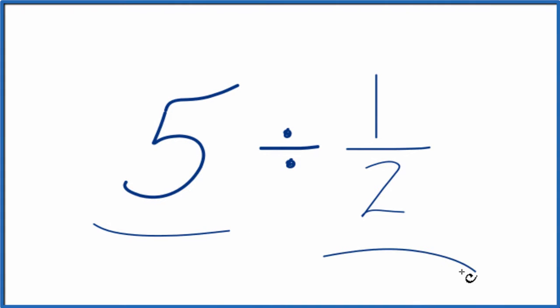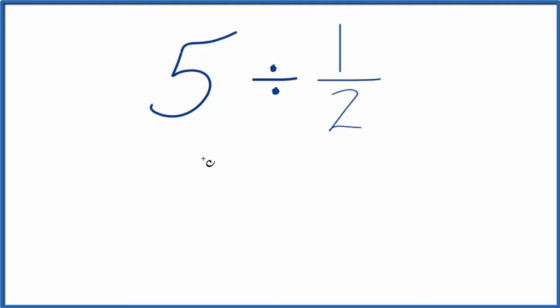Let's divide 5 by 1 half, and here's how we do it. Let's call this 5, 5 over 1. Since we're just dividing by 1, we don't change the value, but this gives us a fraction, and that'll help us.